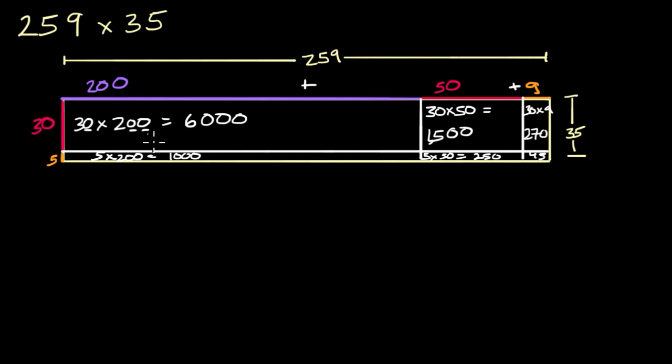Now, why is this interesting? Because each of these little smaller areas, if I add them all up, I get the bigger area. So the bigger area is going to be 6,000 plus 1,500 plus 270. And one way to think about it is each of these are partial products. They're partial products of just 30 times 200, or 30 times 50, or 30 times 9.